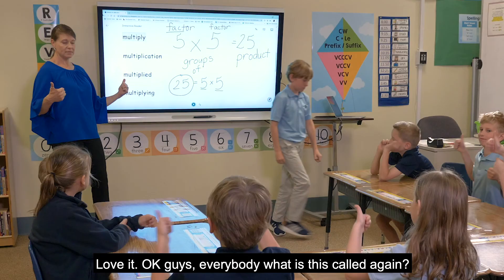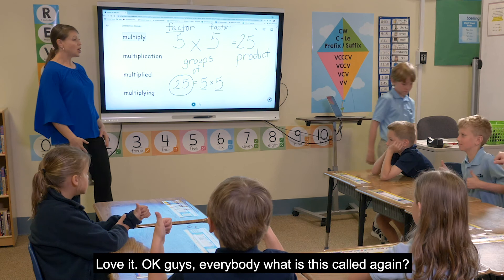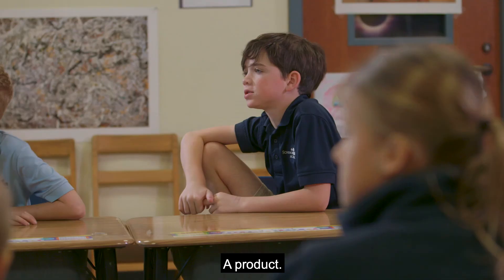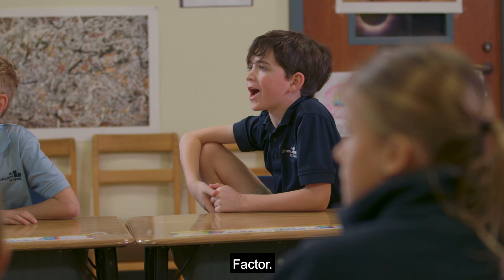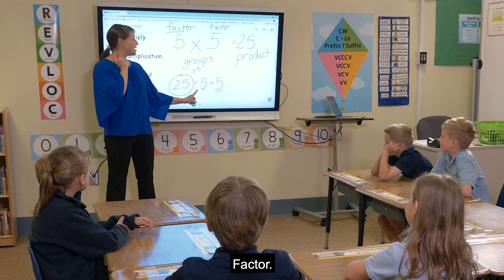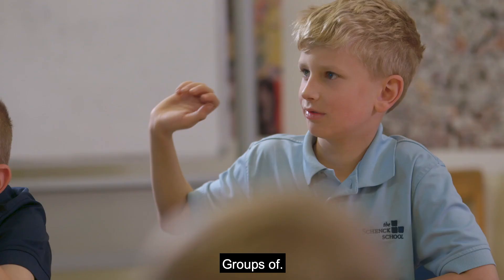Okay, everybody — what is this called again? Product. And what is this? Factors. And what does your symbol mean? Groups of. Beautiful.